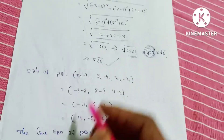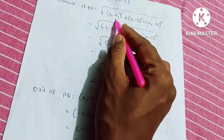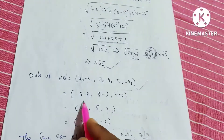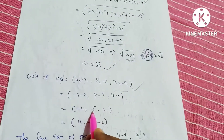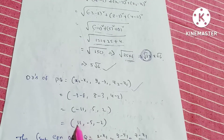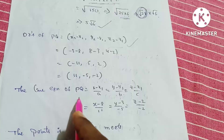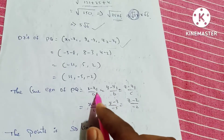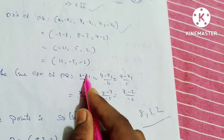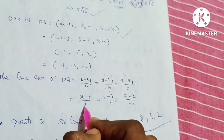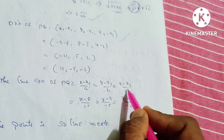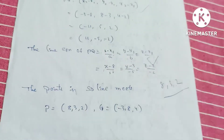The shortest distance is 5√6. For the SD line equation through P(8,3,2) with direction ratios (−11, 5, 2): the line equation is (x−8)/(−11) = (y−3)/5 = (z−2)/2. We used the direction ratios from PQ and the point P to write the equation of the shortest distance line.